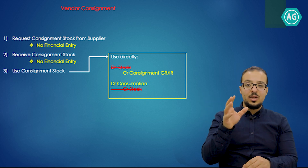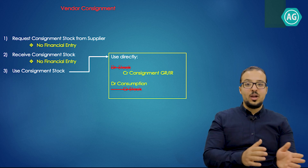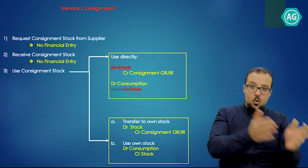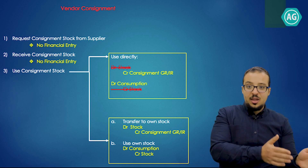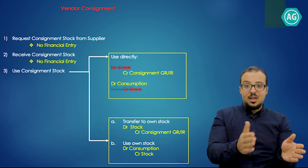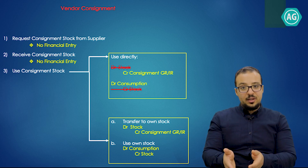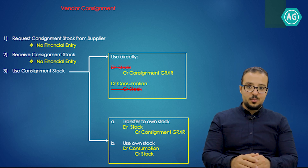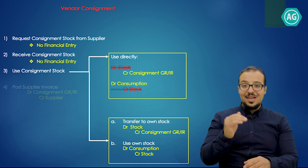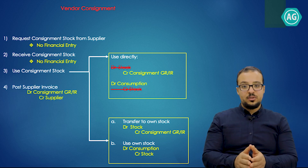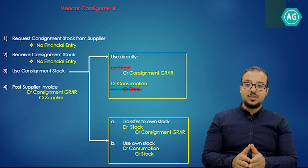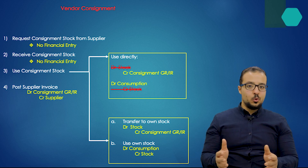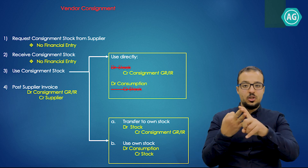SAP can handle this in two ways: either transferring the product first to our own stock and then posting goods receipt and consumption separately, or doing both steps at the same time as a single goods issue. The last step is posting the supplier invoice, where the financial entry is a credit to the supplier and a debit to the GR/IR account. So the full process steps are: purchase order, goods receipt, goods issue, invoice.